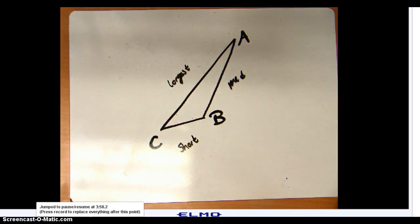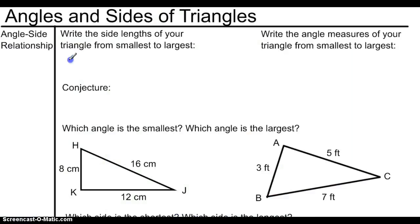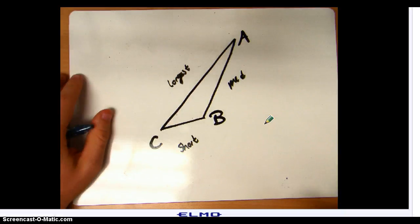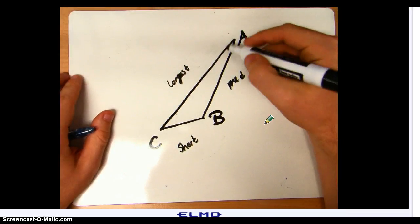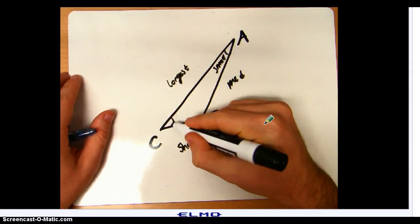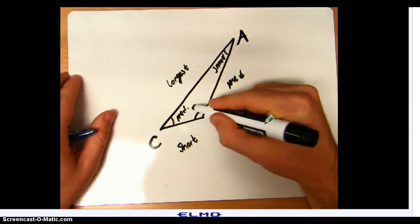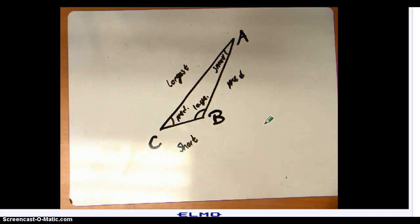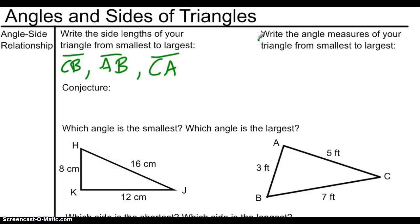Let's write that down in our notes. Our shortest side was CB, our medium length side was AB, and our longest side was CA. Now looking at the angles, my smallest angle is angle A, the medium size angle is C, and the largest angle is B. Write the angle measures from smallest to largest: smallest was angle A, medium was angle C, and largest was angle B.